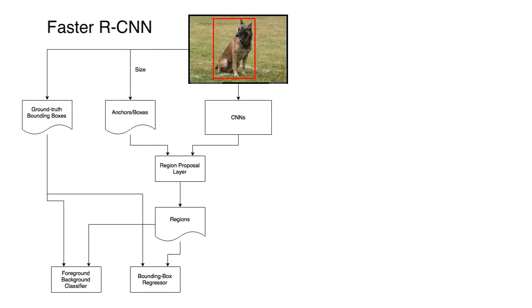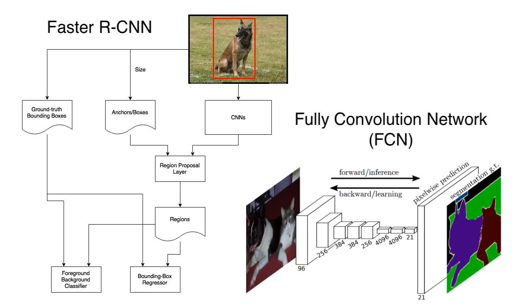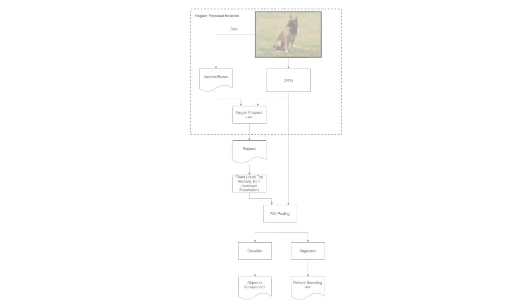For object detection, it uses an architecture similar to faster R-CNNs. For semantic segmentation, it uses fully convolutional networks. So first off, what is an R-CNN?